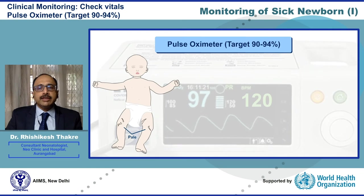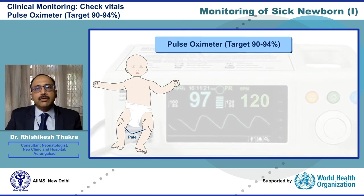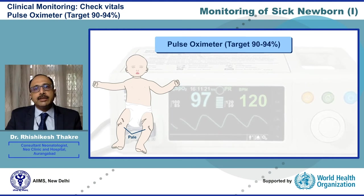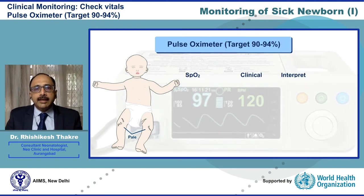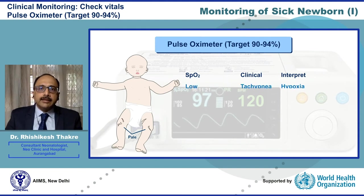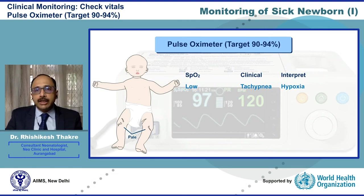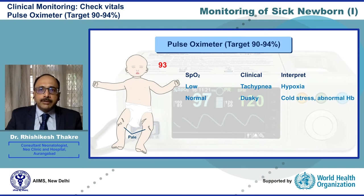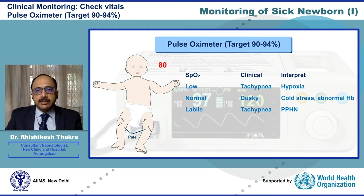All sick babies must have oxygen saturation documented by means of pulse oximeter. The target oxygen saturation is 90 to 94 percent. Any time the oxygen saturation in room air is less than 90 percent, we will call it hypoxia. A low oxygen saturation tells us there could be an underlying problem secondary to a respiratory or cardiac etiology. A normal oxygen saturation in a baby who appears dusky indicates a possibility of cold stress or an abnormal hemoglobin like methemoglobinemia. A labile, fluctuating oxygen saturation is a hallmark of pulmonary hypertension.